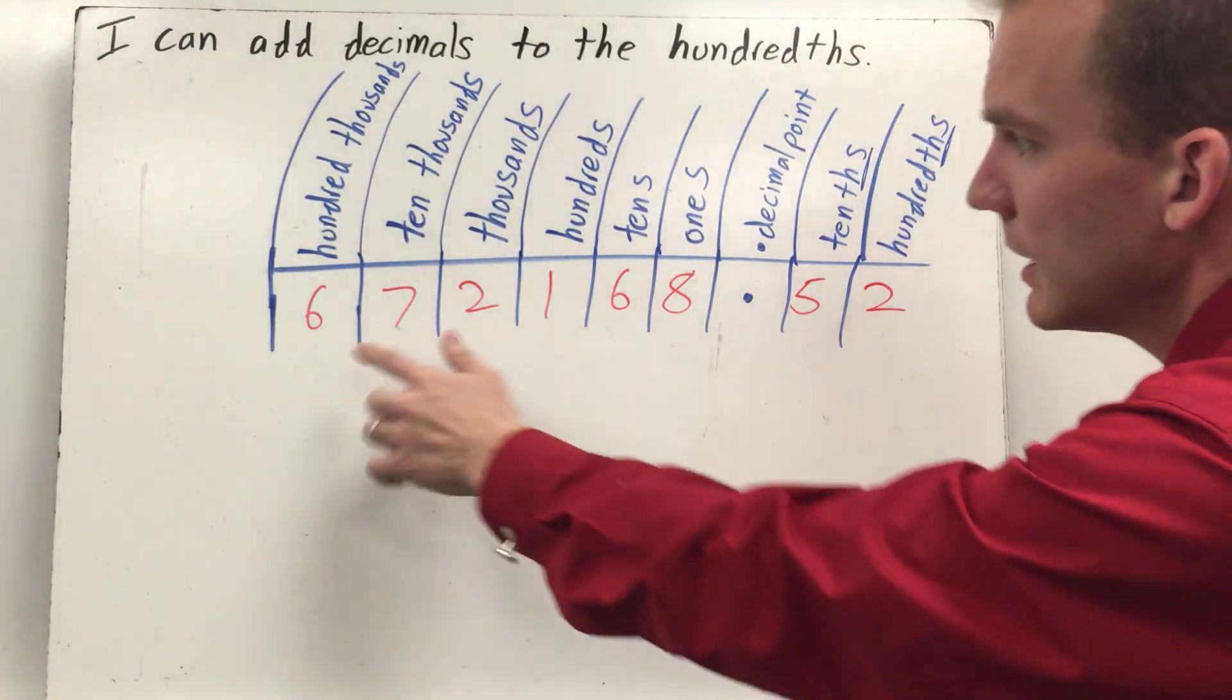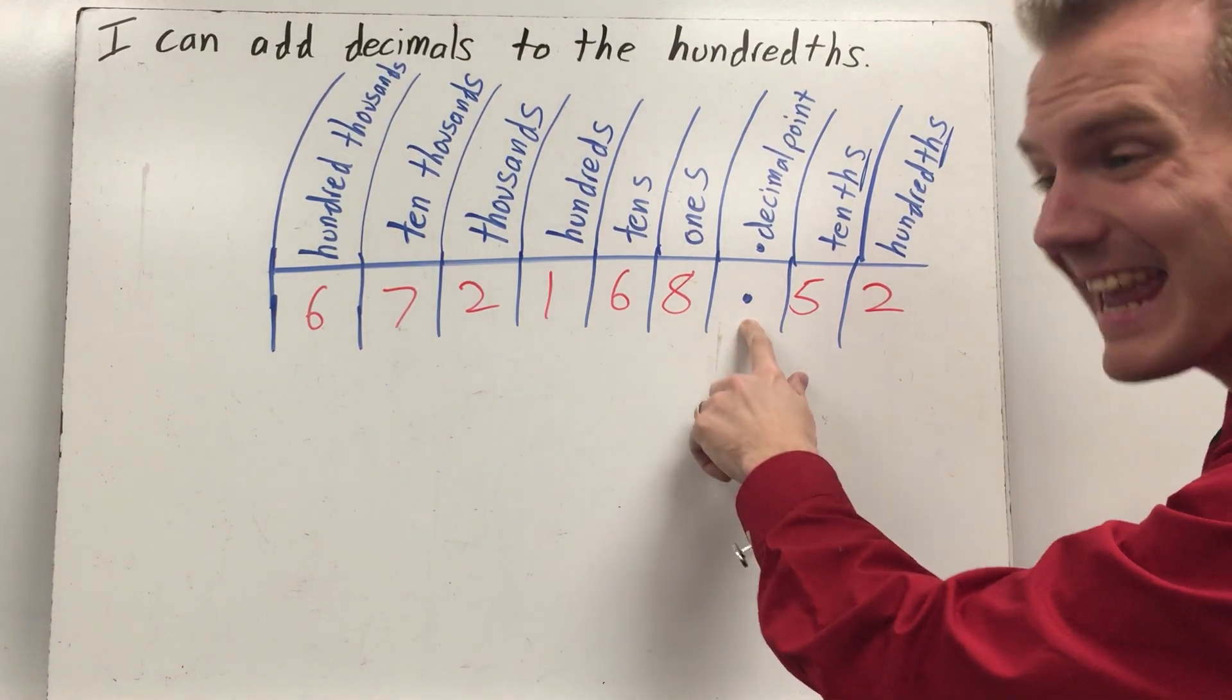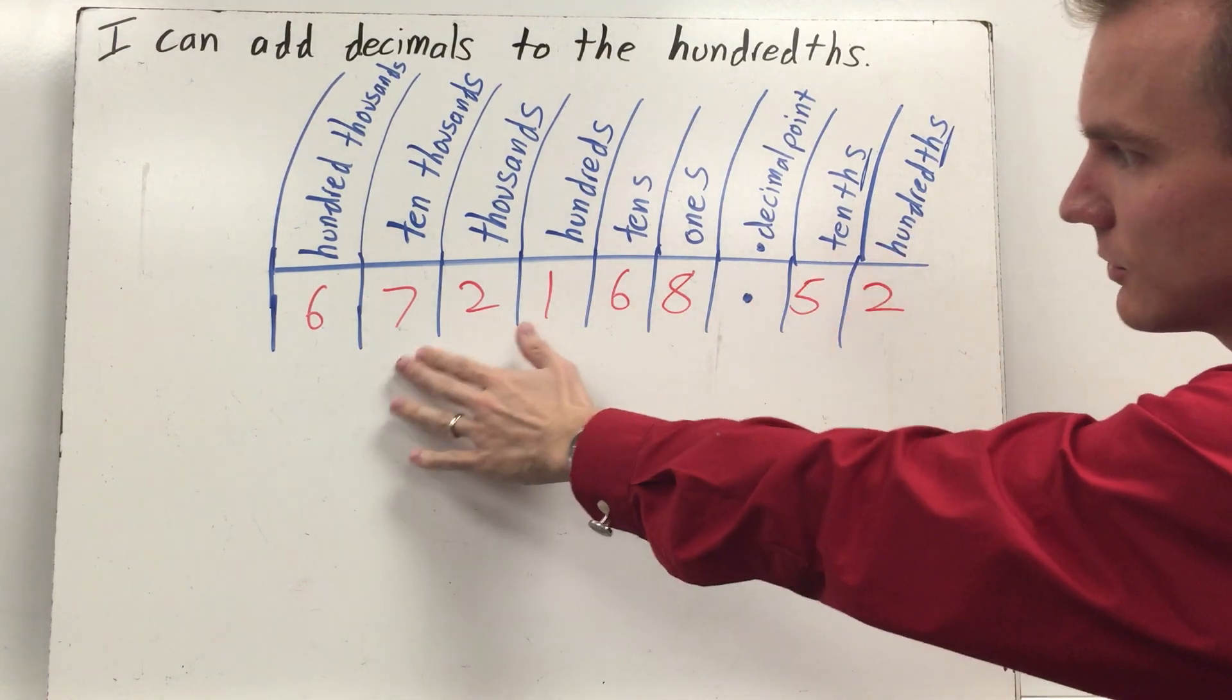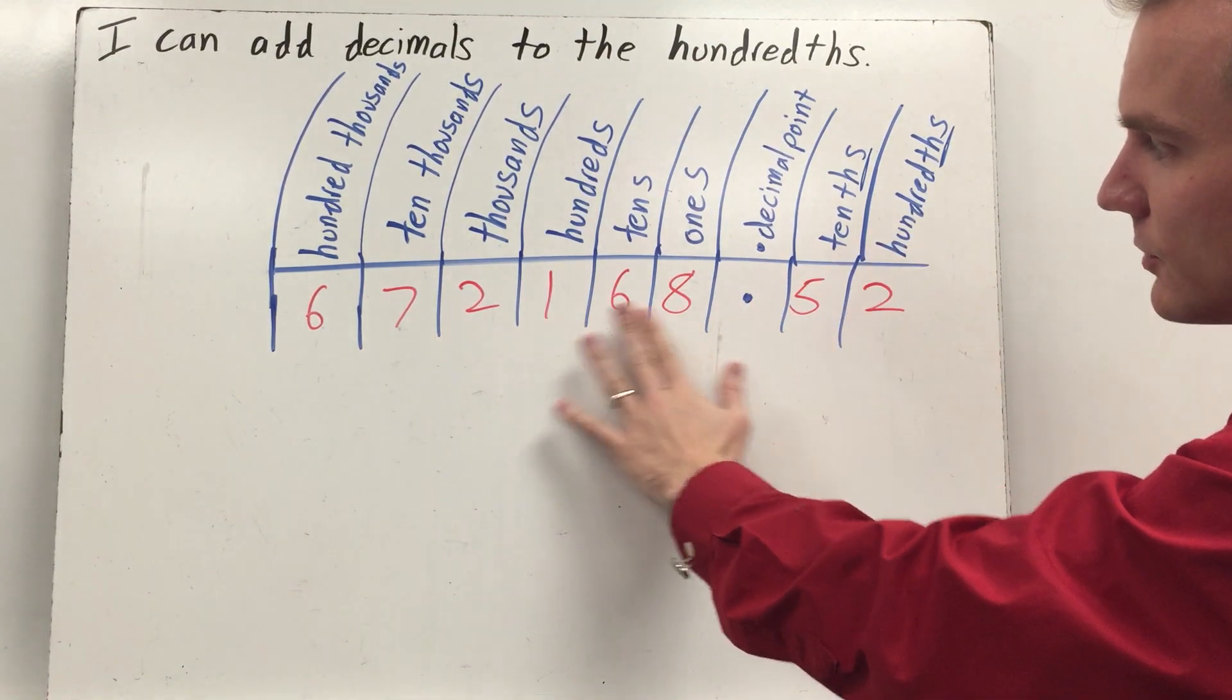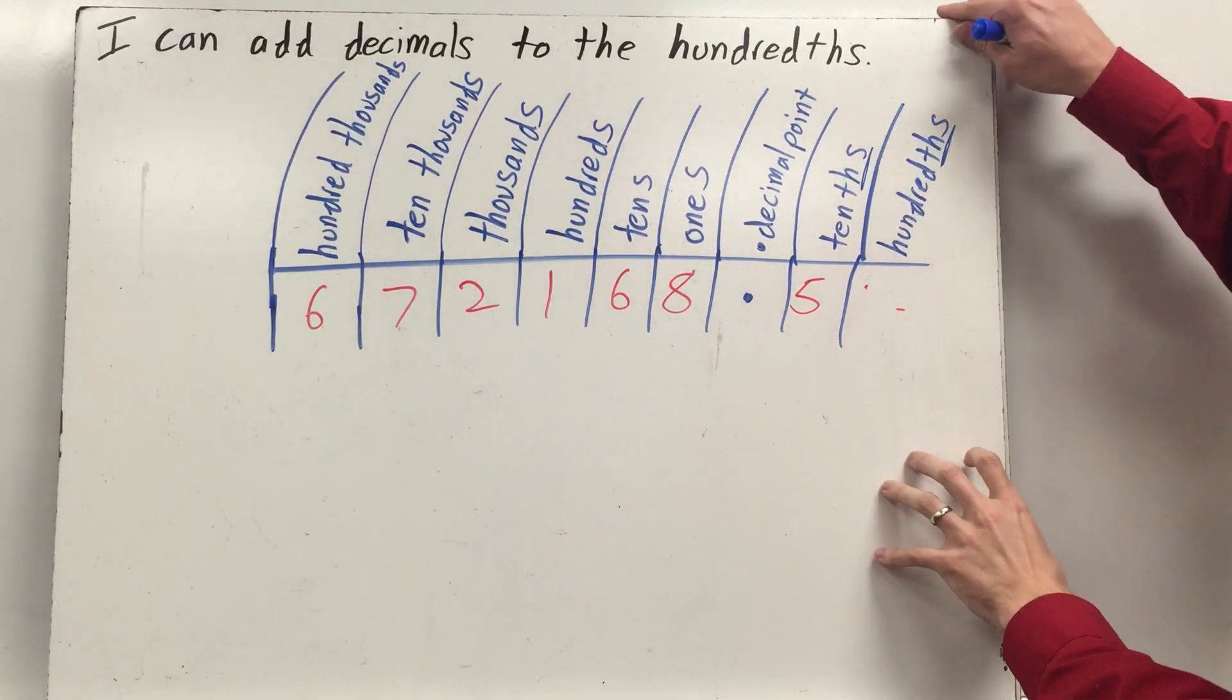This number would be read 672,168 and 52 hundredths. If it just had the five, it would be read 672,168 and five-tenths.